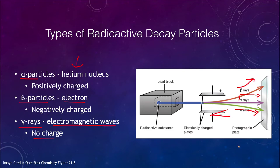You'll also notice that the amount of deflection is different. The beta rays are deflected more because an electron has a lower mass than an alpha particle, so the deflection is less based on the mass as well.